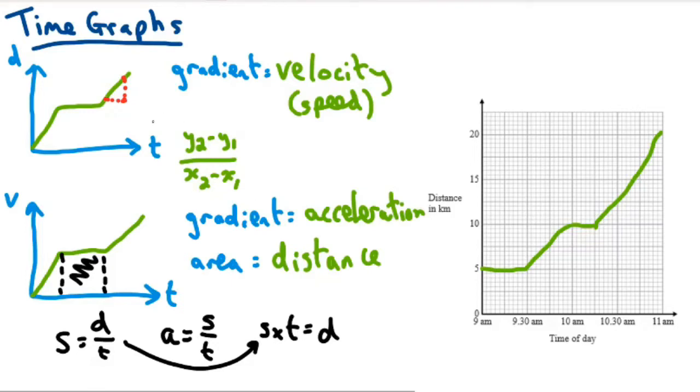Therefore, just when you're doing these questions, you just want to be sure. Is it a distance time graph, or a velocity time graph? Because these can then be used to get different things. Distance time can get you the velocity from the gradient. Velocity time can get the acceleration from the gradient. And the distance from the area.